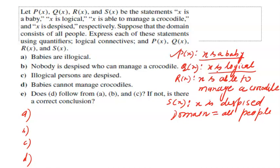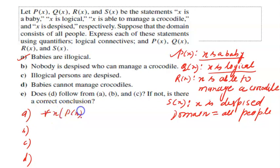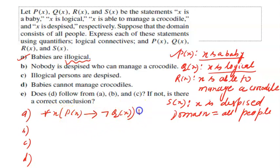One thing to highlight: in exams they may not necessarily give you the predicate definitions, in which case you can define them yourself. The first statement is: babies are illogical. So for all x, P(x) implies negation of Q(x). Q(x) is 'X is logical,' so 'X is illogical' is negation of Q(x). The first statement becomes: for all x, P(x) implies negation of Q(x).